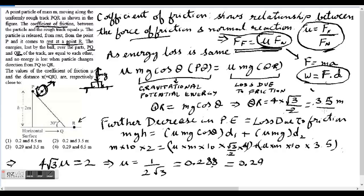The values of coefficient of friction mu and the distance X equal to QR are respectively close to, and then they have given four options.